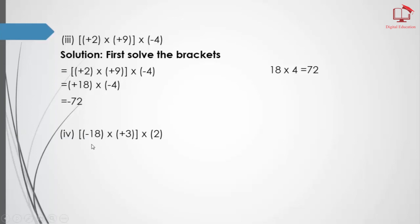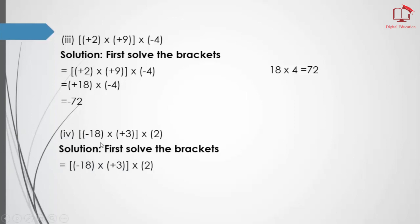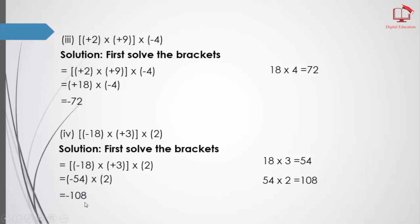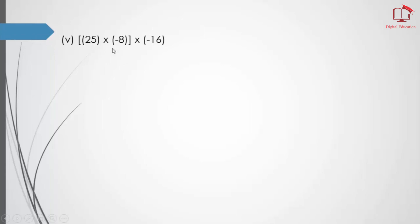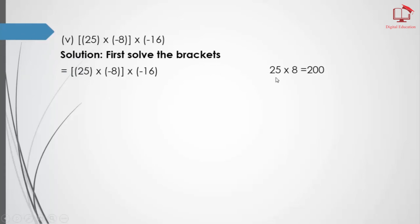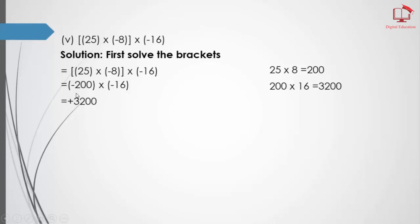Part number 4: same — first solve the bracket. Then 18 multiplied by 3 equals 54, and plus times minus equals minus; we write minus 2 as it is. Now if we multiply 54 by 2 the answer is 108; plus times minus equals minus, so we write minus 108. Part number 5: first solve the bracket. Then 25 times 8 equals 200, and plus times minus equals minus; we write minus 16 as it is. Then 200 times 16 equals 3200, and minus times minus equals plus 3200.